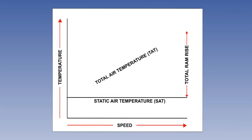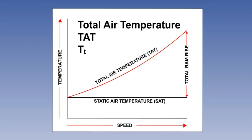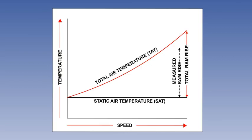Total air temperature is defined as the maximum temperature attainable by the air when brought to rest adiabatically. In formulae, it is often written as T subscript T. Unfortunately, any measurement process always has leaks and inefficiencies, so we do not measure the full ram rise. The amount of ram rise actually sensed is called the measured ram rise. If we could measure the total ram rise, we would measure the total air temperature. However, in practice, what we measure is the ram air temperature, which is lower.